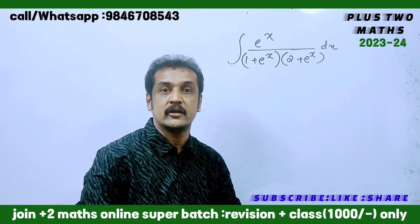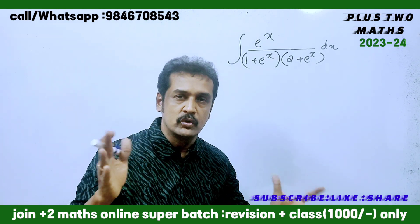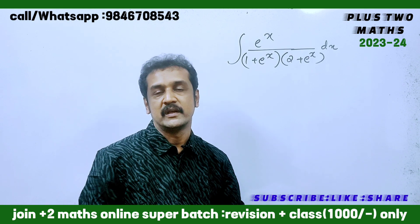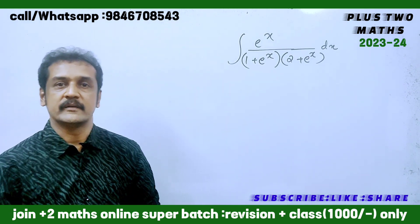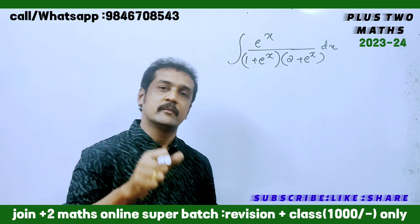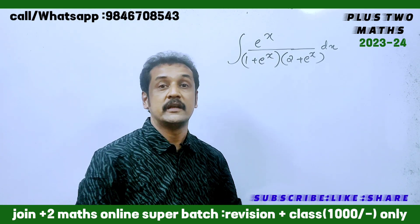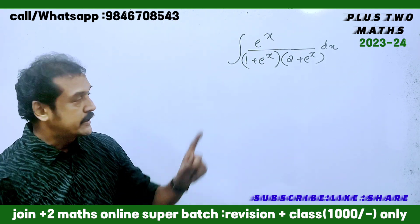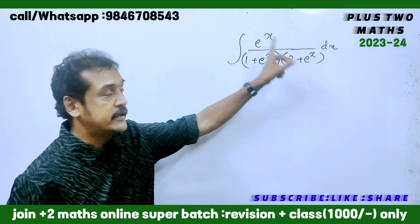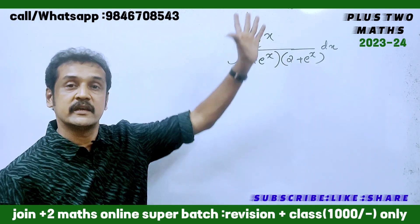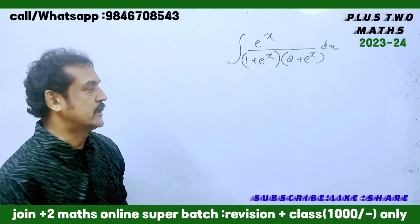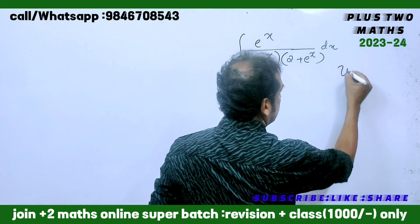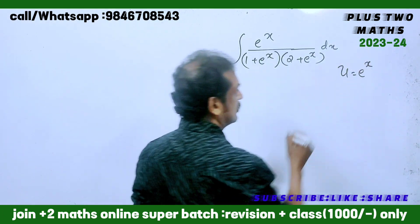What are we starting? If we are learning, we don't have a substitution method, because the denominator is equal to e raise x. So, u is equal to e raise x.